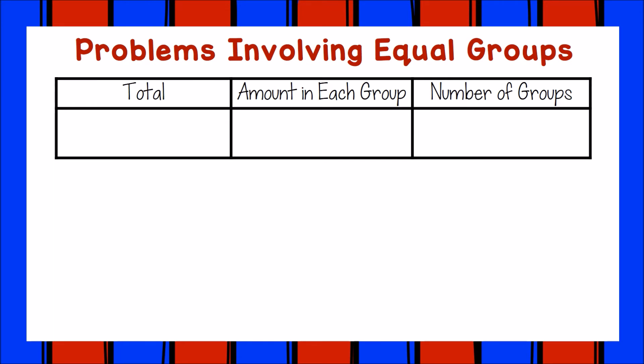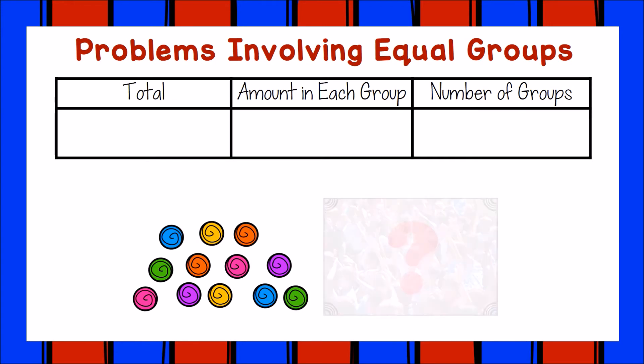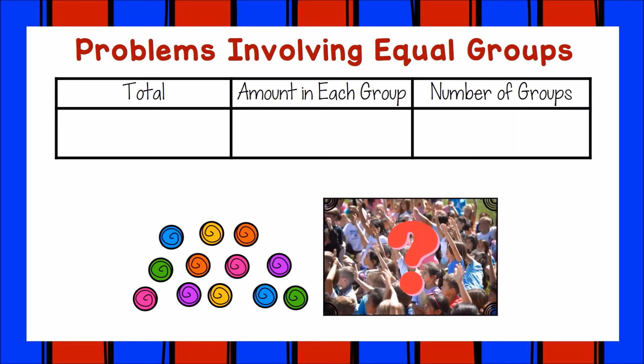Let's take a look at one last problem. In this problem we also know the total amount. Alanna has twelve candies. If she gives away three candies to each friend she sees, how many friends will get candy?